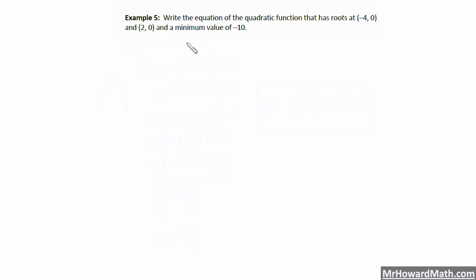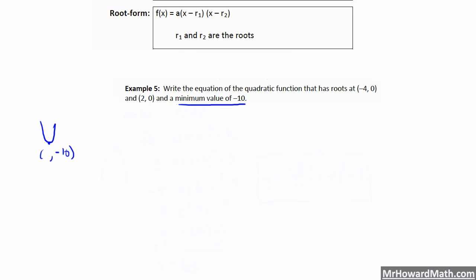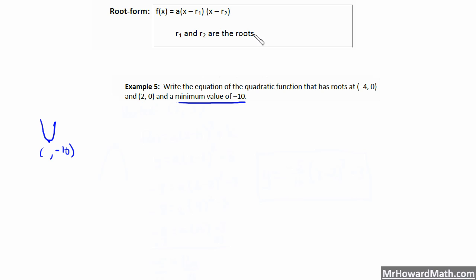Last example for this video. Write the equation of the quadratic function that has roots at negative 4 comma 0 and 2 comma 0 and a minimum value of negative 10. Since they give us roots, we use root form. A minimum value means the parabola opens upward with the y-coordinate of the vertex at negative 10. We need to find the x-coordinate of the vertex using the symmetry of the parabola.